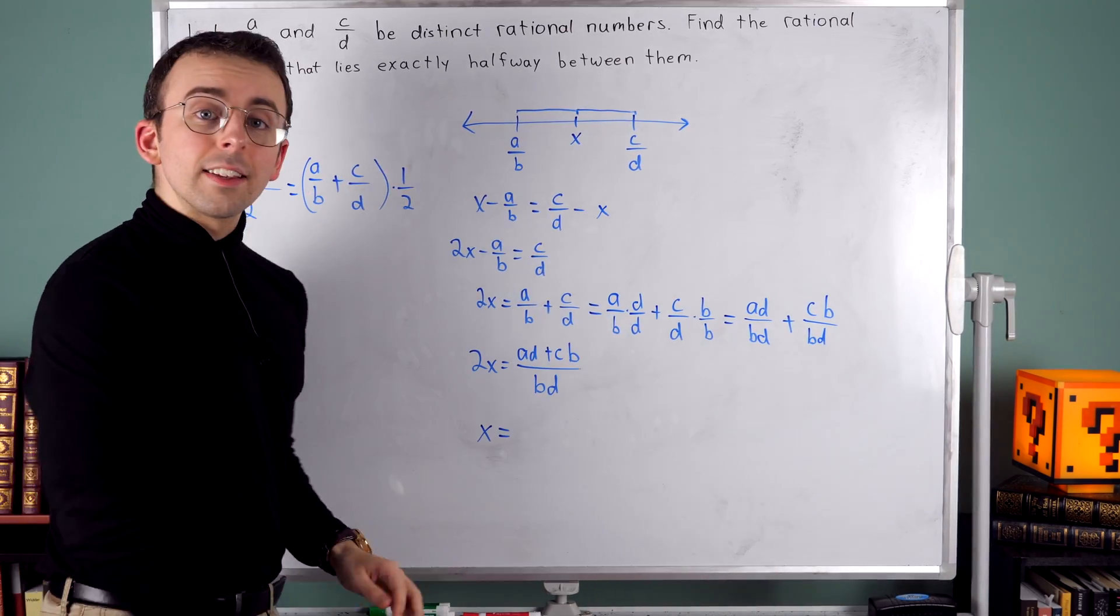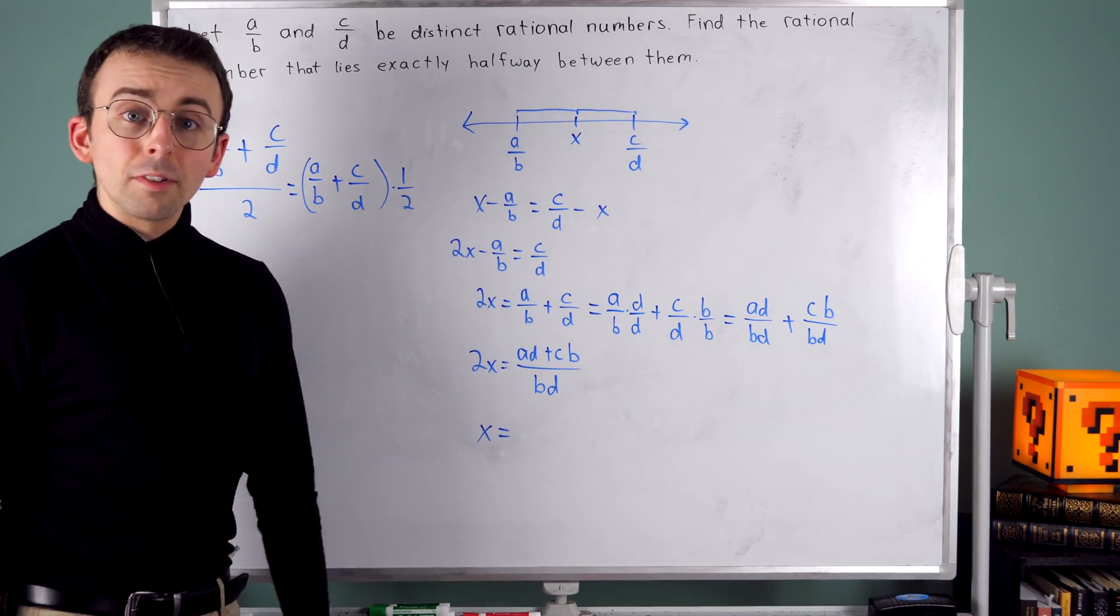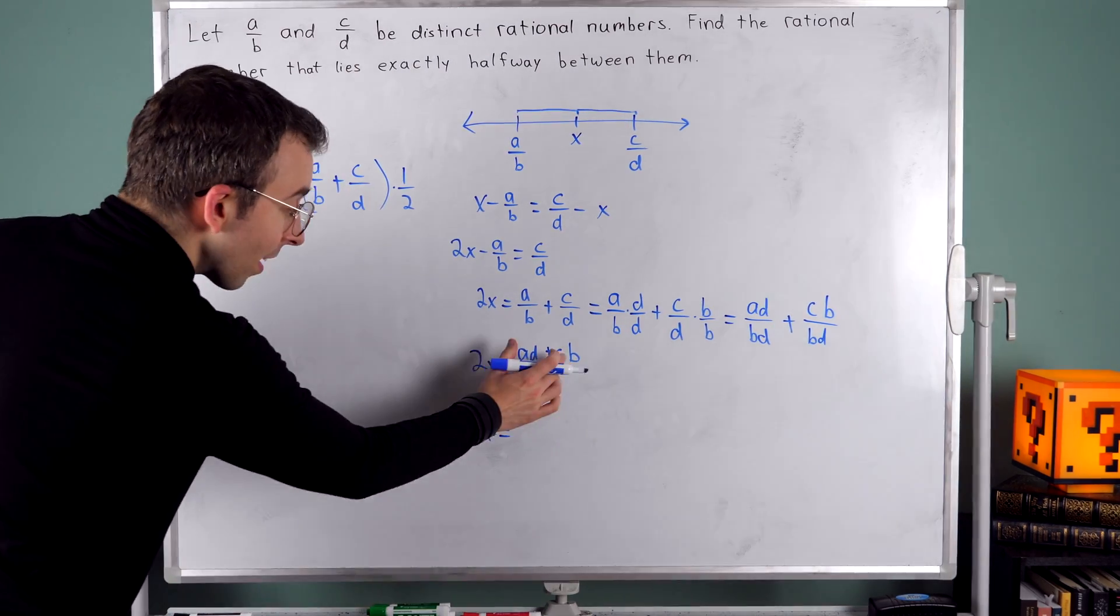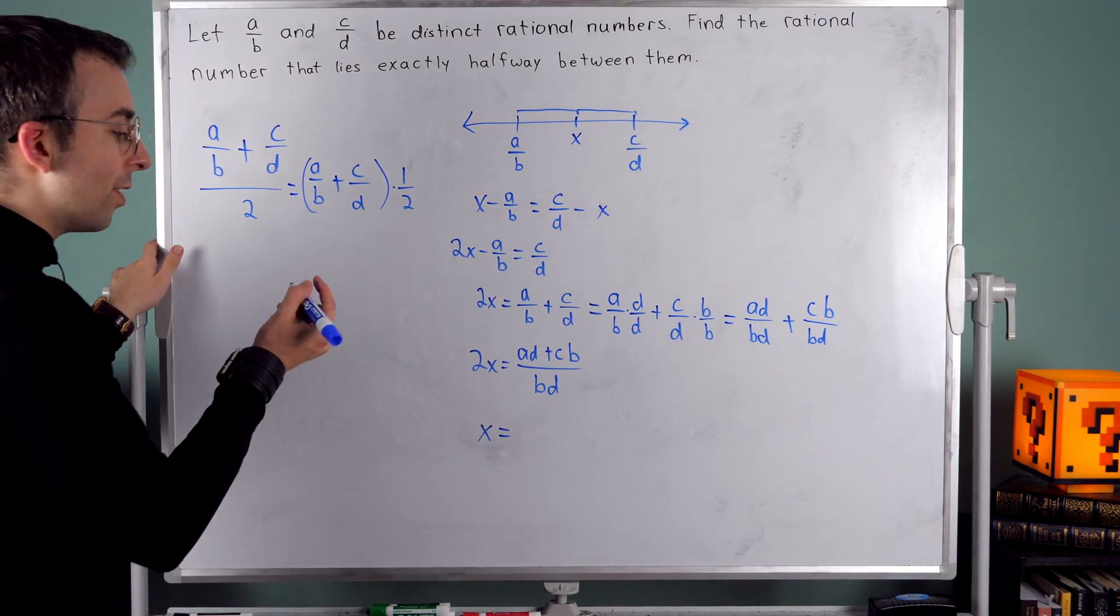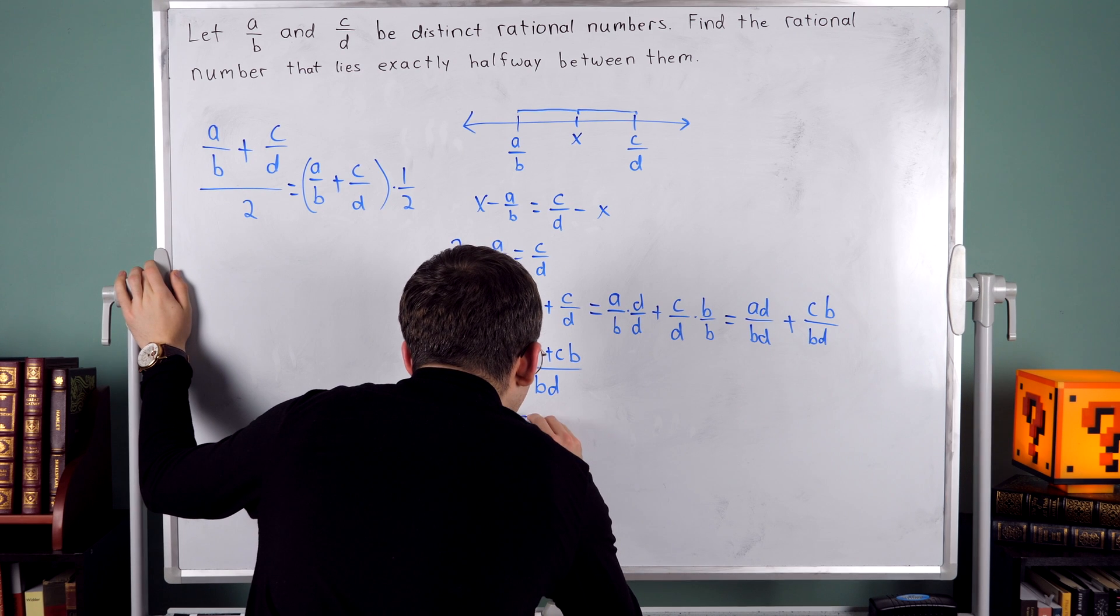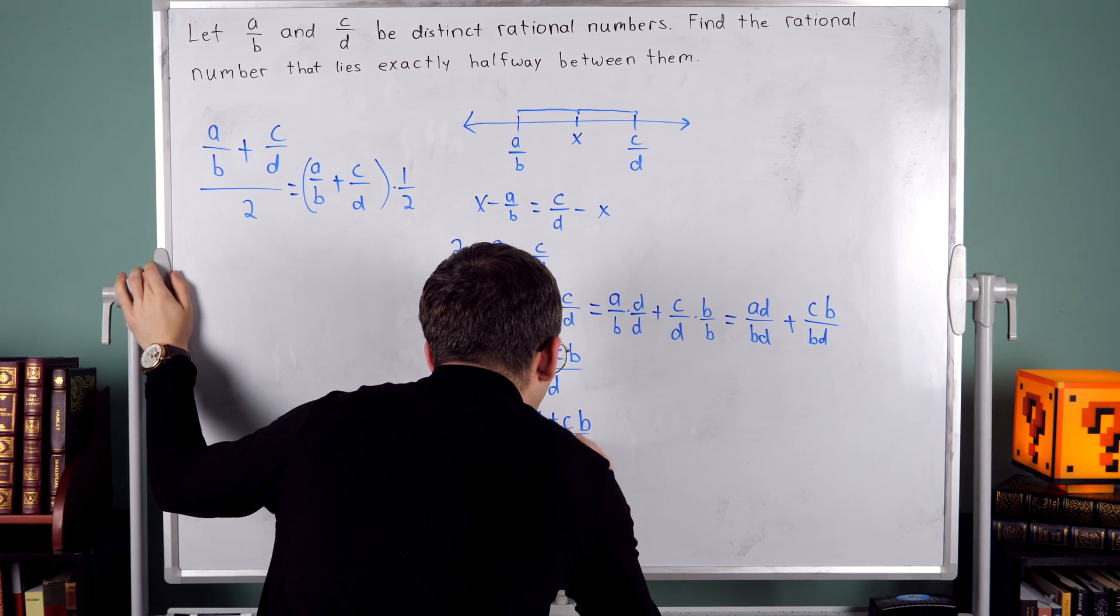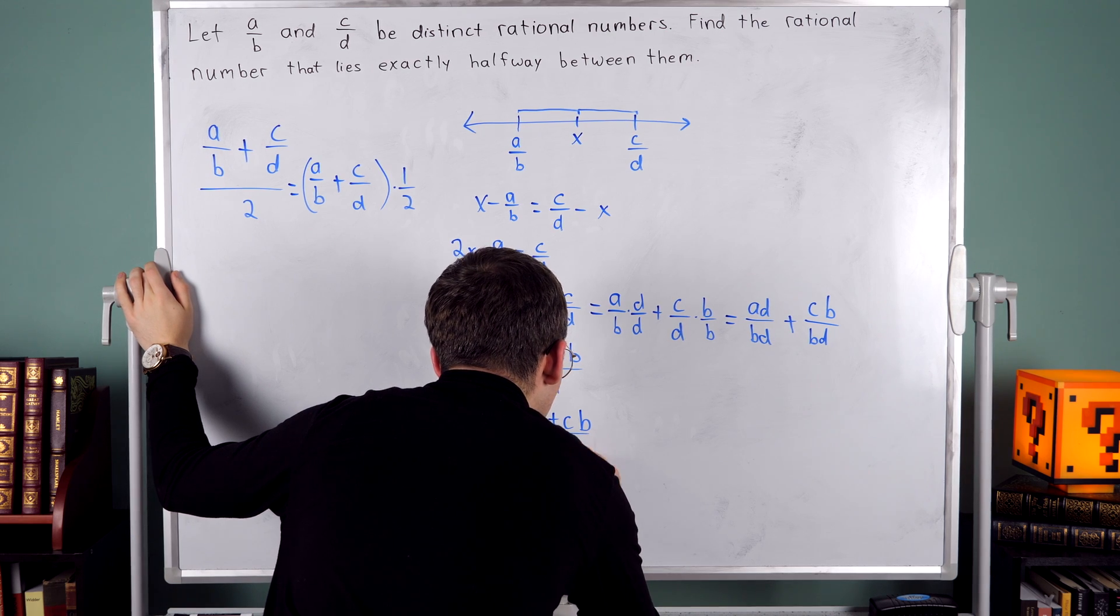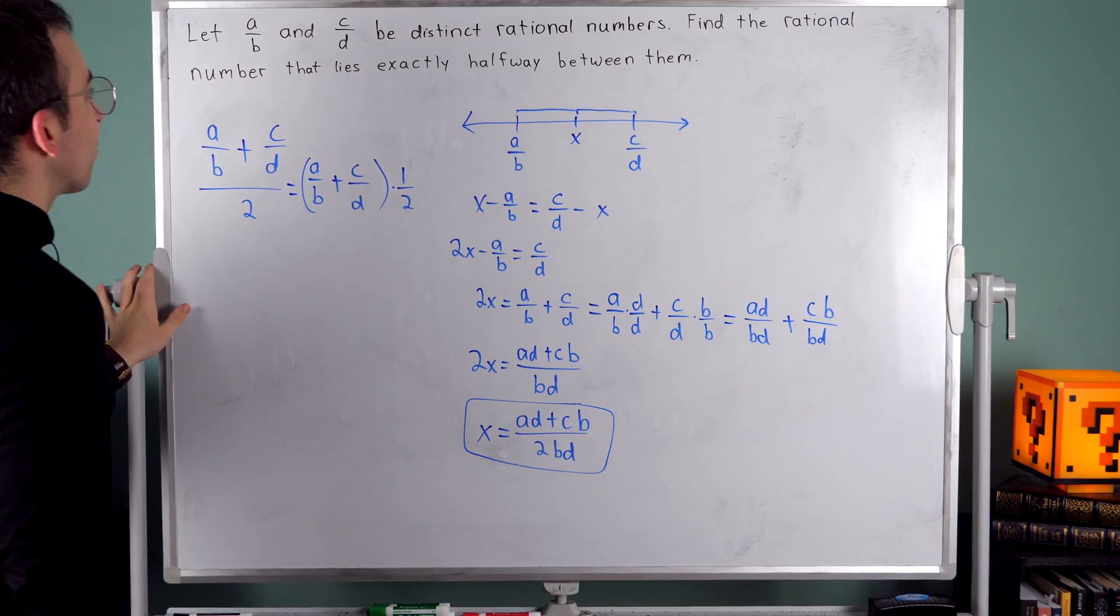On the right, I'm dividing this by two. Remember dividing by two is the same as multiplying by one half. And if I multiply this by one half, I'll just have a factor of two down in the denominator. So X is equal to A D plus C B over two B D. And that is my final answer.